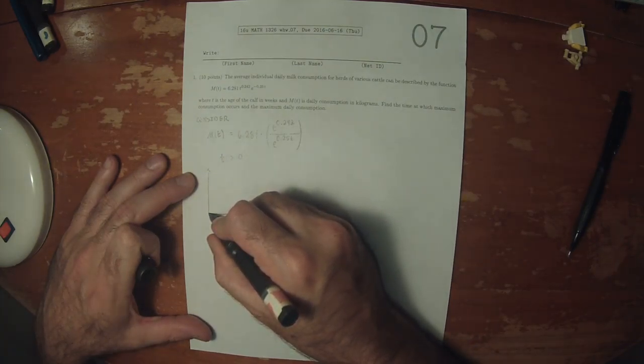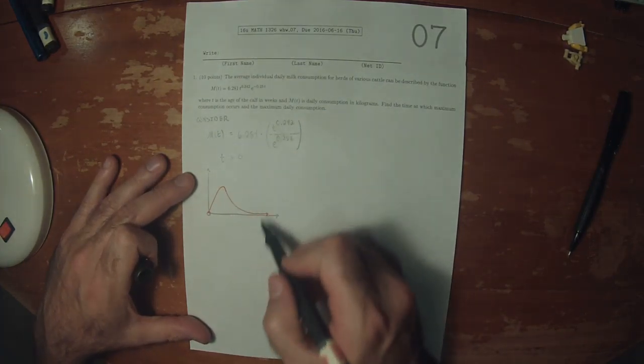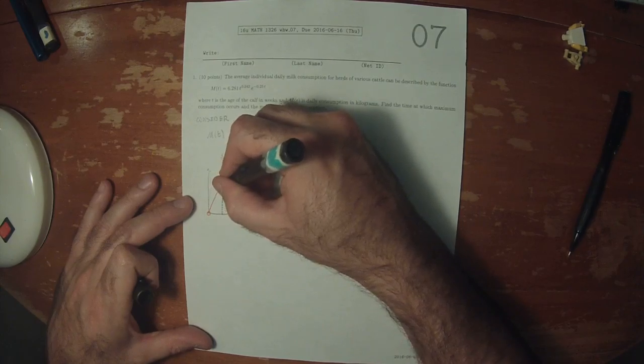So the expected behavior of this function should be something like this: at t equals 0 it should be 0, and then it will increase until the exponential function increases faster, and then it will decay. So that's our expectation. I drew it open at 0 because of this. So we're expecting that there should be some time here where there's a stationary point.